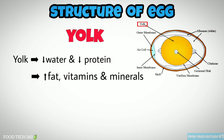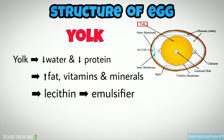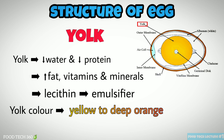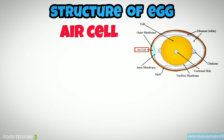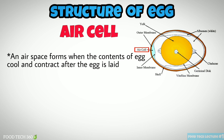The yolk contains less water and protein than albumin, but contains more fat and most of the vitamins and minerals present in the egg. It is also a source of lecithin, which is an effective emulsifier. The yolk color changes from yellow to deep orange based on the feed and breed of the hen. The yolk contributes 30 to 33% of total egg weight.